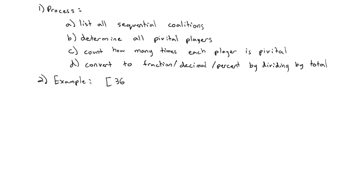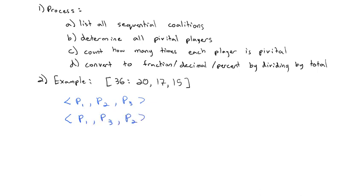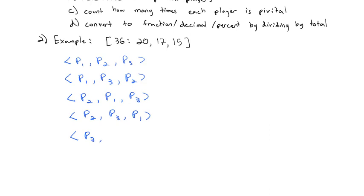Let's do an example. Consider the weighted voting system where 36 votes are required for quota, player one gets 20 votes, player two 17 votes, and player three gets 15 votes. First, we list all the sequential coalitions: player one, two, three; player one, three, two; player two, one, three; player two, three, one; player three, one, two; and player three, two, one. That covers all the different orders for the vote.